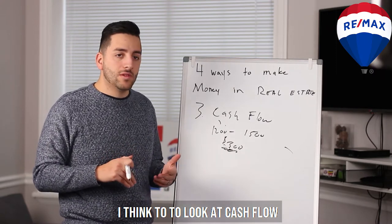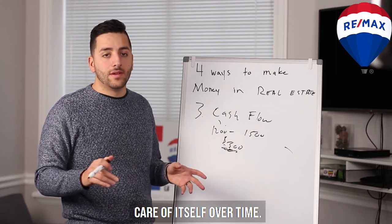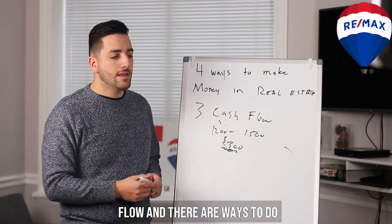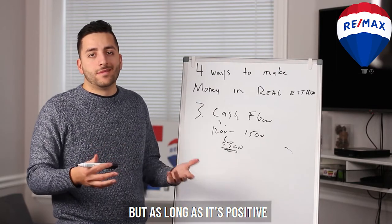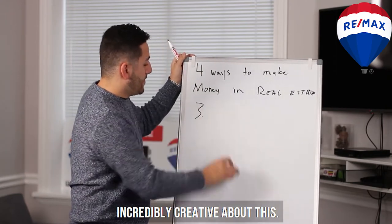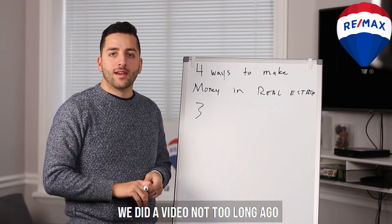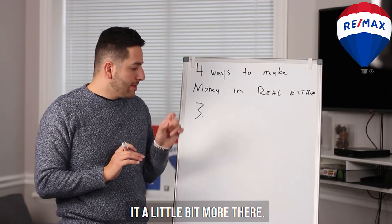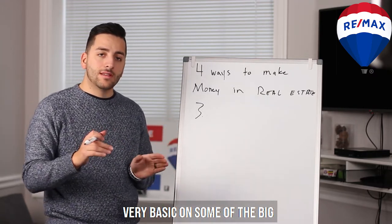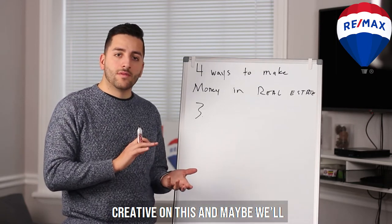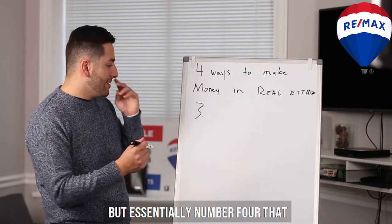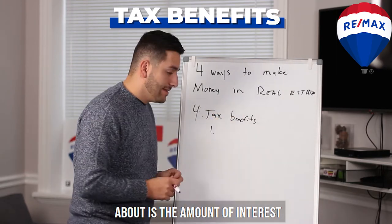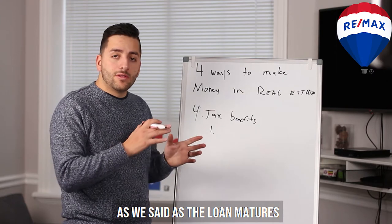You want cash flow to be positive so the property is paying for itself and then a little bit more. That's the best way to look at it — making sure it's positive and will take care of itself over time. Most people talk about getting rich through cash flow, and there are ways to do it, but as long as it's positive you're in a pretty good spot. Now item number four: tax benefits.